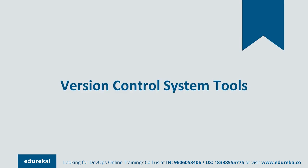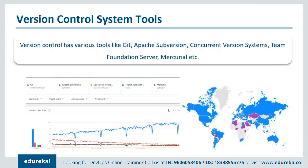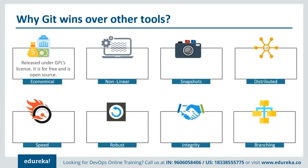Now that you have a gist about version control and its various types, let's look into the tools that offer version control. The top leading tools in the market are Git, Apache Subversion, Concurrent Version Systems, Team Foundation Servers, Mercurial, and others. But we can clearly see from trends that Git wins over the other tools. Git offers many features — let's start with those.